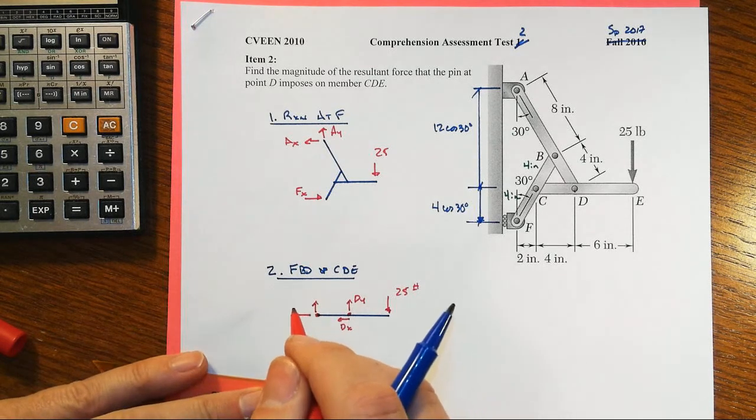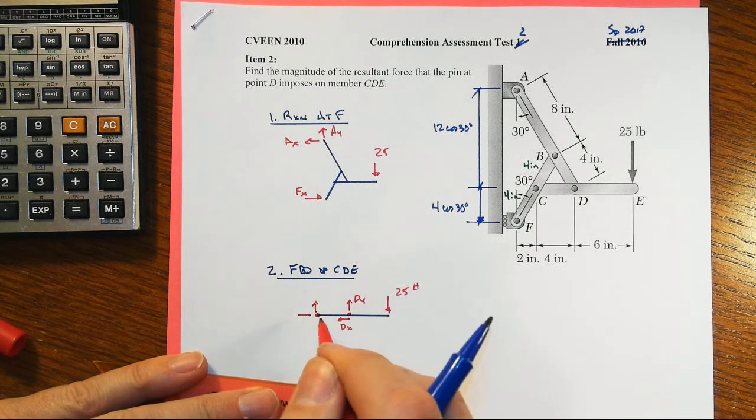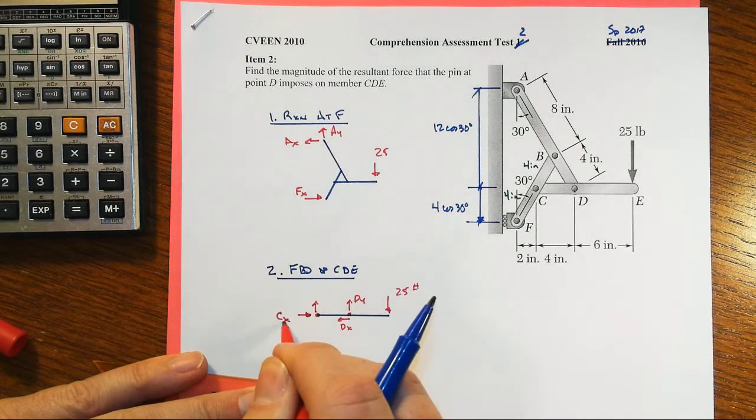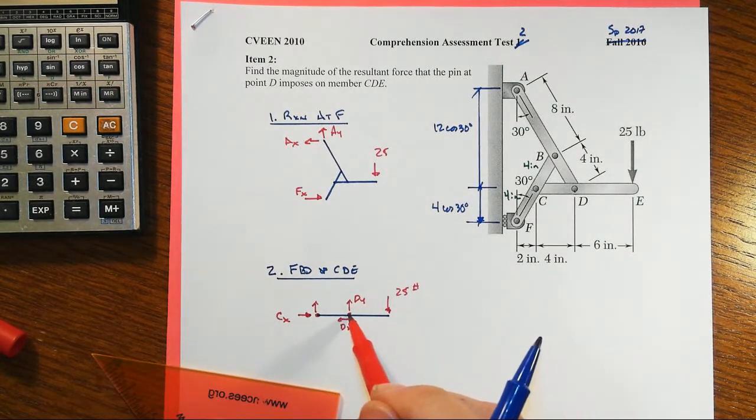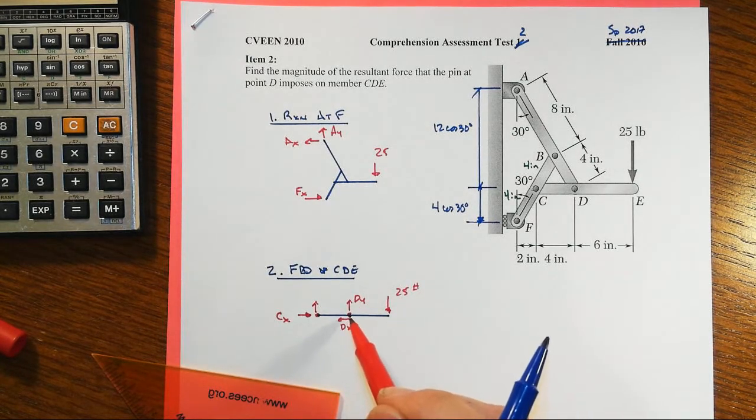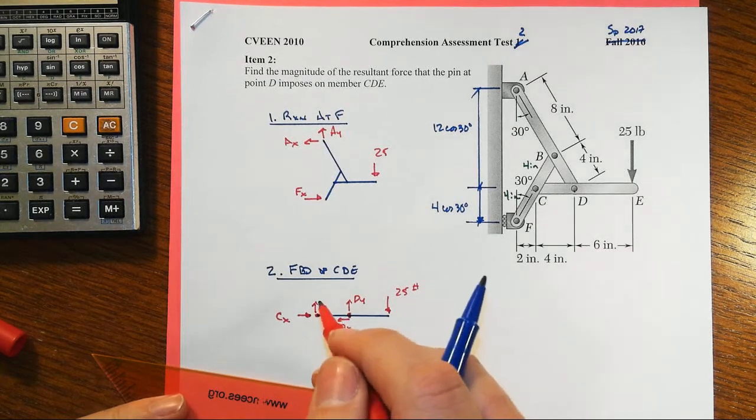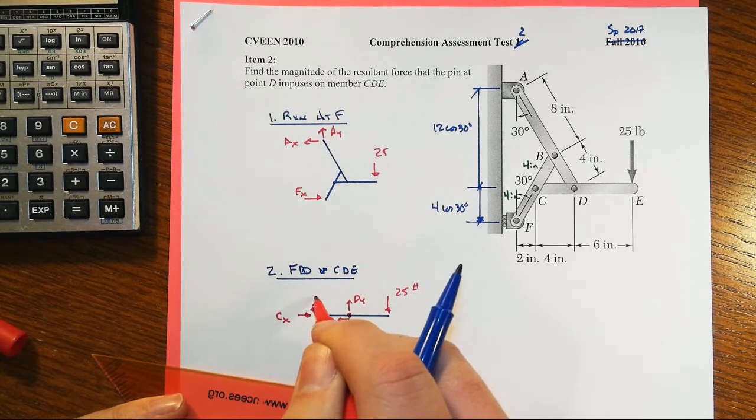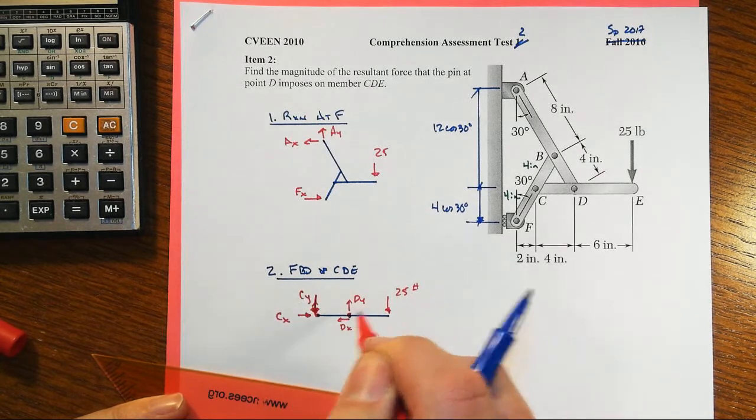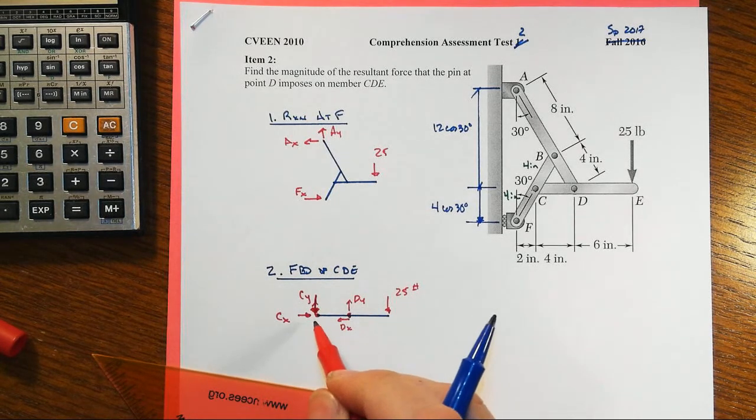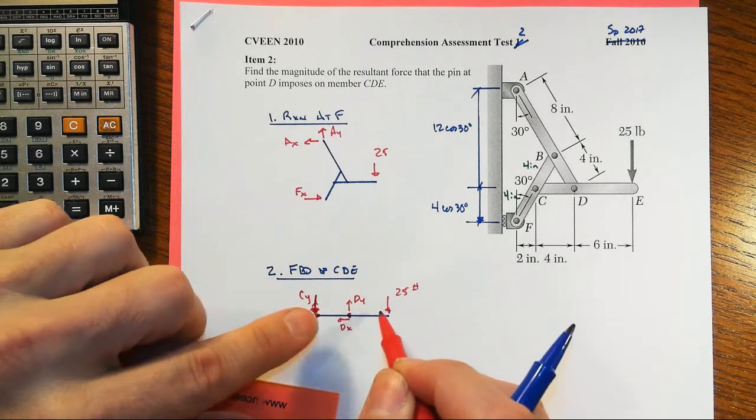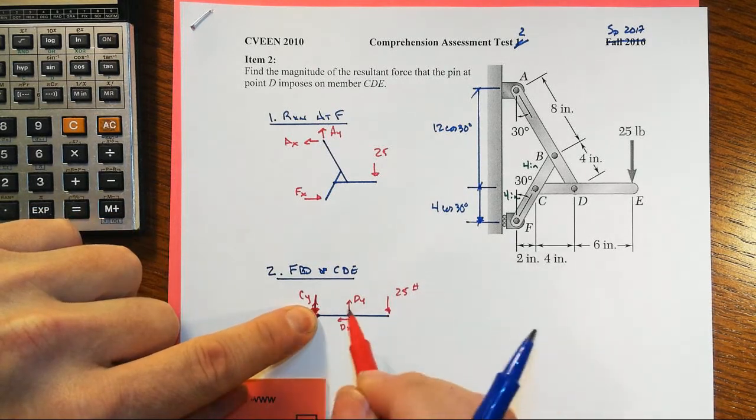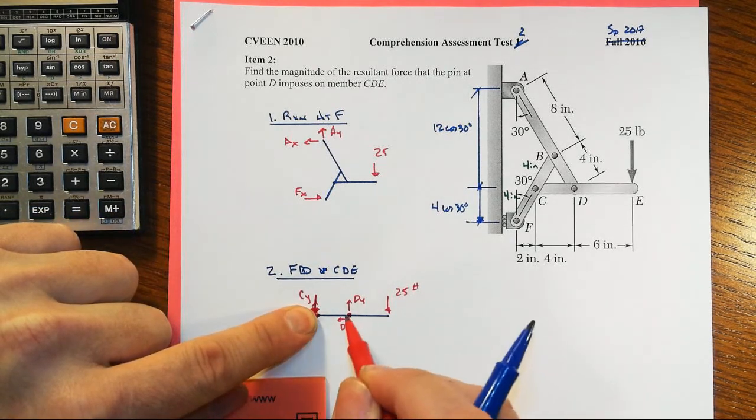Other than what our moxie might tell us. Okay, so let's take a look here. If I sum moments about D, I get rid of DY and DX—I know that's what I want—but it does tell me that this is like a teeter-totter, so CY also has to be going down here. If we sum moments about point C, then 25 wants to go in a counterclockwise fashion, so DY is going the opposite.